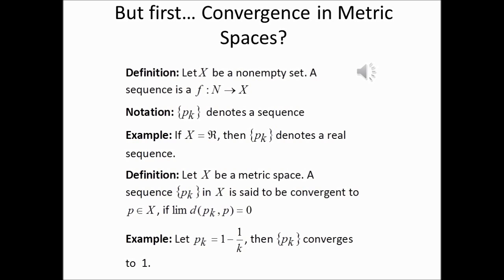First of all, a sequence is basically a function from the set of natural numbers to X, and we denote a sequence by p sub k. P sub k is just the k-th term of the sequence. As an example, suppose that X is a set of real numbers, then the sequence is real.